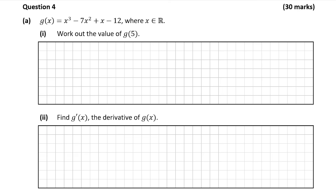So we're given a function and in part A1 we're asked to work out the value of g of 5. So we have g of x, and to work out g of 5 we just put in 5 wherever we have x in the original function. If you compare the function and the question you'll see that 5 is in place of x, so you just put 5 in for x.